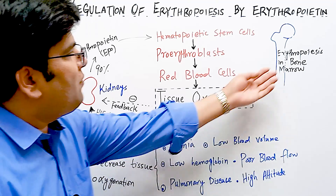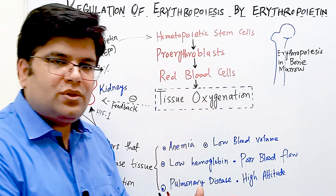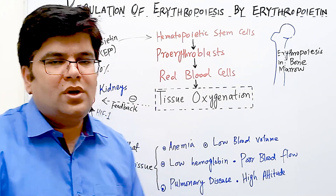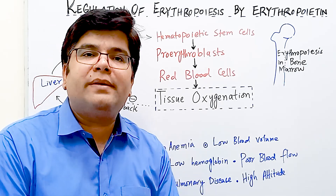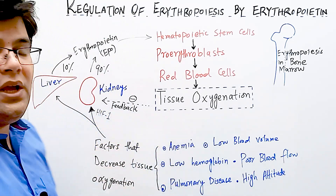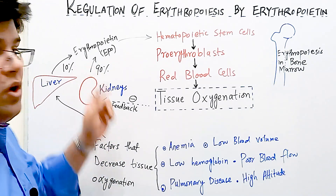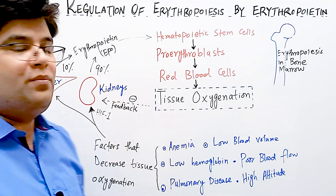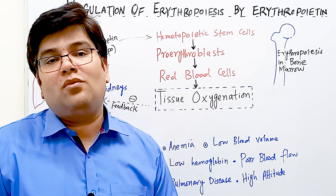As more red blood cells enter circulation, oxygen carrying capacity increases, more oxygen is delivered to tissues, and this acts as a negative feedback mechanism — the kidneys then decrease erythropoietin production. This negative feedback very finely and tightly controls red blood cell count. Without erythropoietin, even in hypoxia, very few red blood cells are produced. However, when erythropoietin is elevated and nutrients are sufficient, it can stimulate bone marrow to increase red blood cell production up to ten times or more.